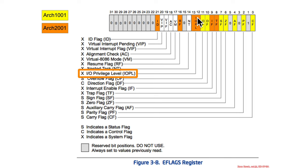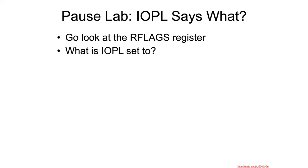The IOPL field is in the RFLAGS register at bits 12 and 13. Now it's time for a quick pause lab — pause the video, go look at your RFLAGS register, and check what the IOPL bits 12 and 13 are set to.